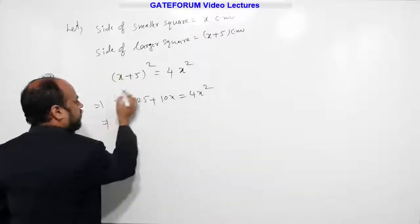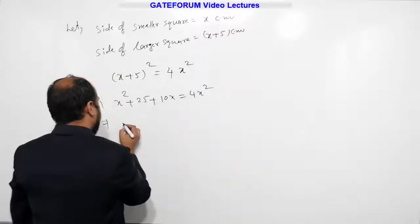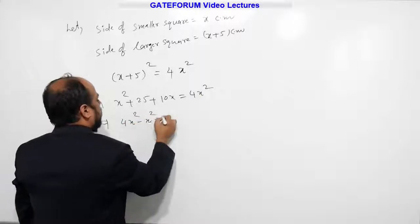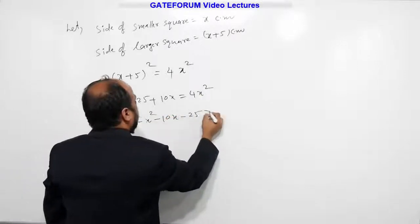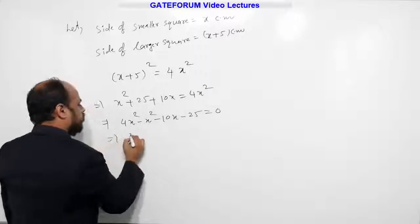From this, I will take this whole values to the right side. So 4x square minus x square minus 10x minus 25 equal to 0. From this, 3x square minus 10x minus 25 equal to 0.